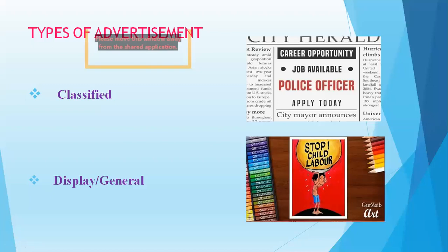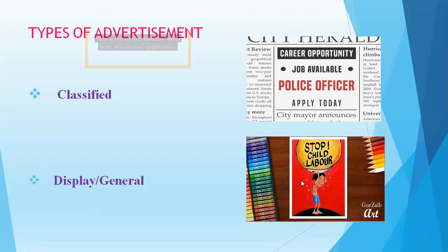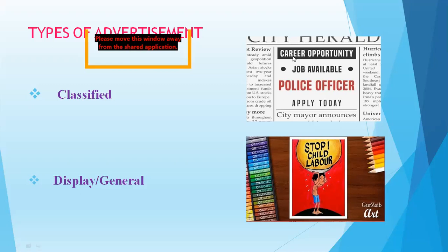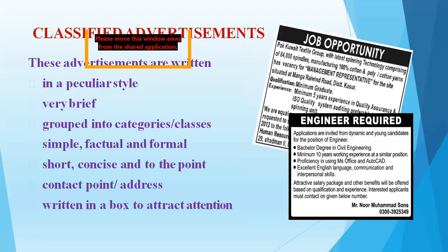There are two types of advertisements: one is classified and the other is display. This example shown here is a classified advertisement, which is generally published in the newspaper. The other type is very pictorial and colourful — that is called a display advertisement. We will discuss display advertisements and posters in the next class. Today we are focusing only on classified advertisements.